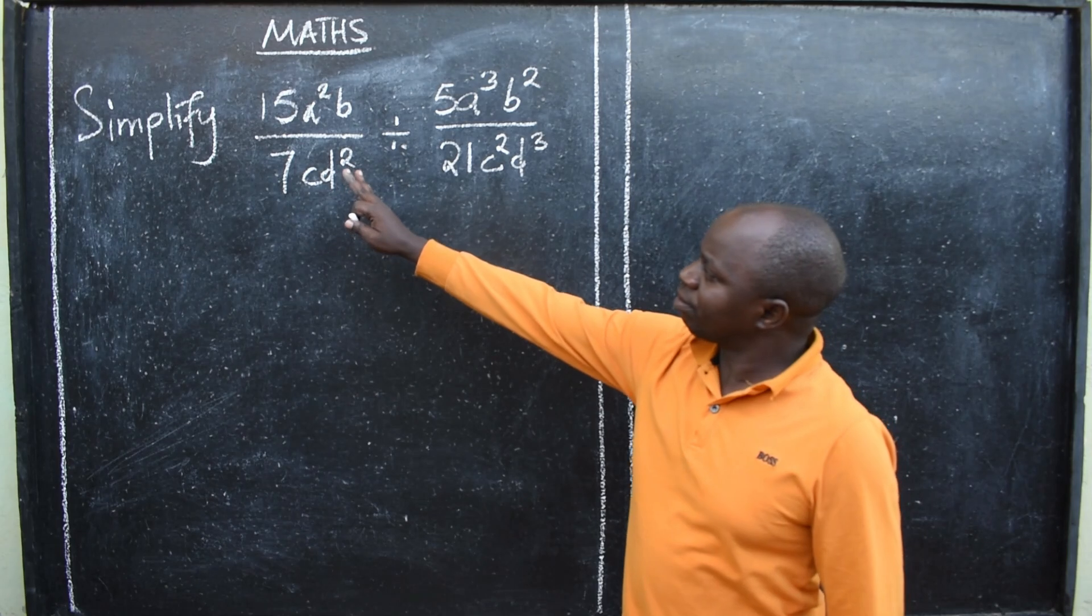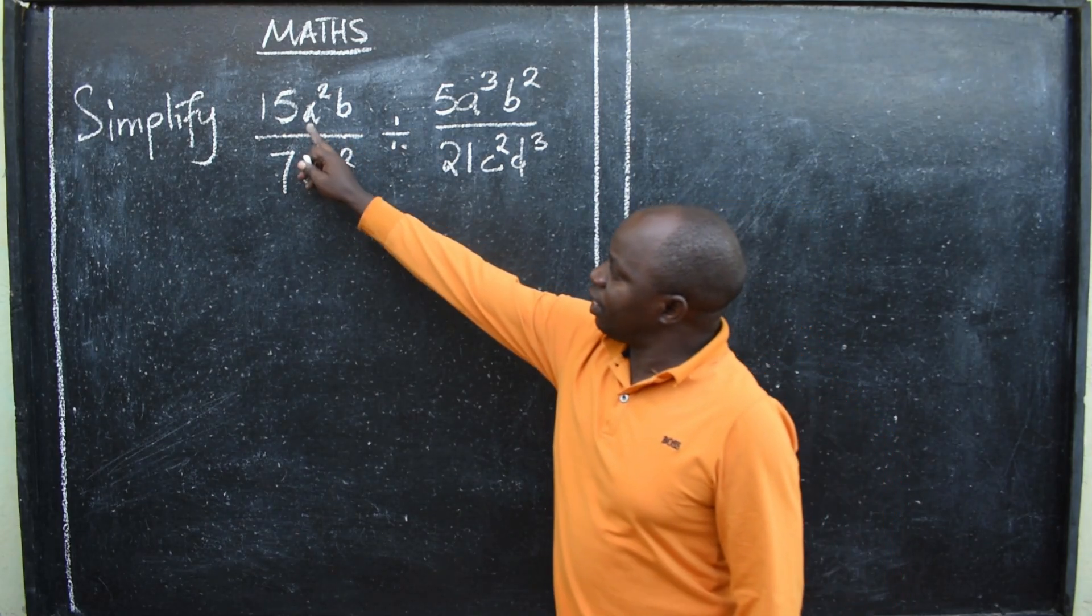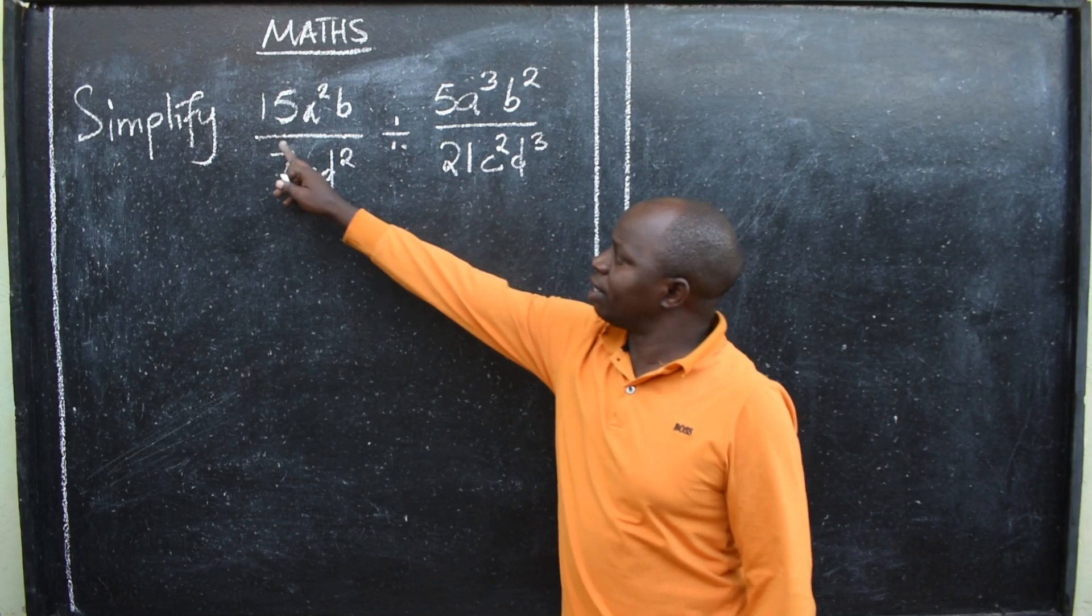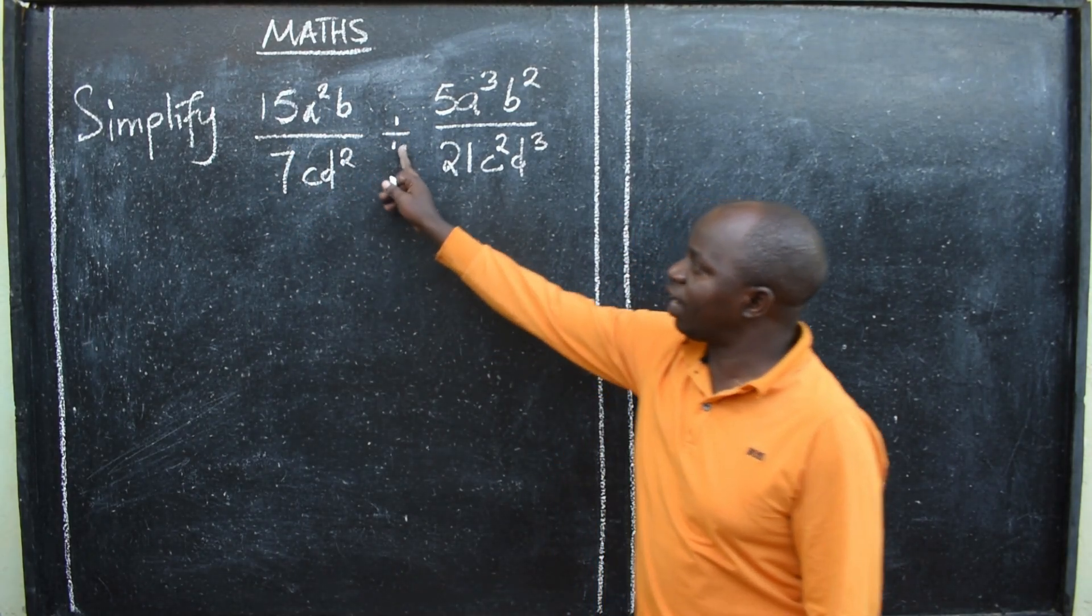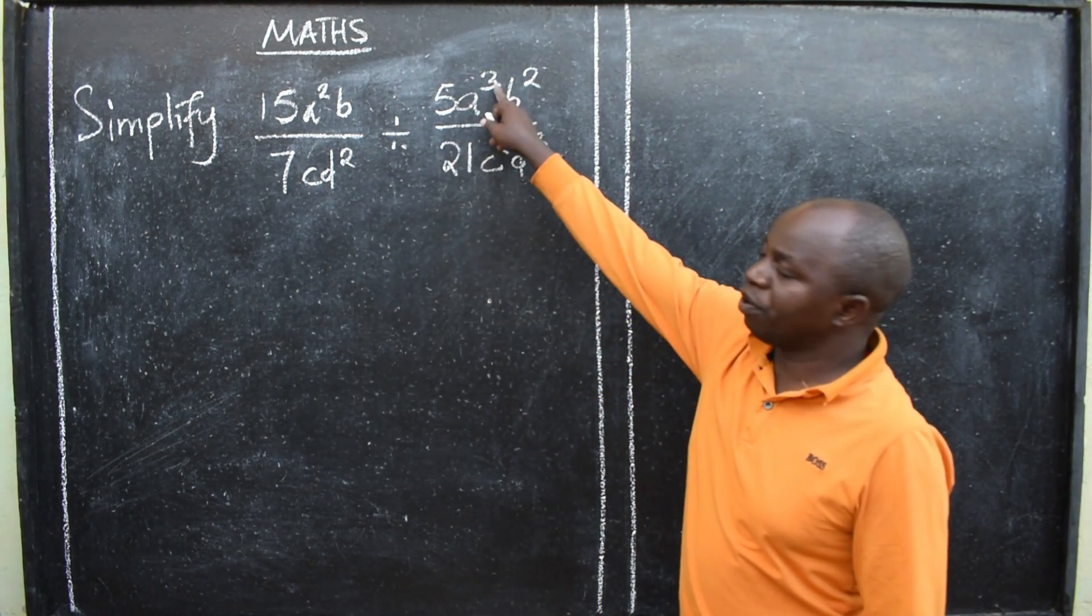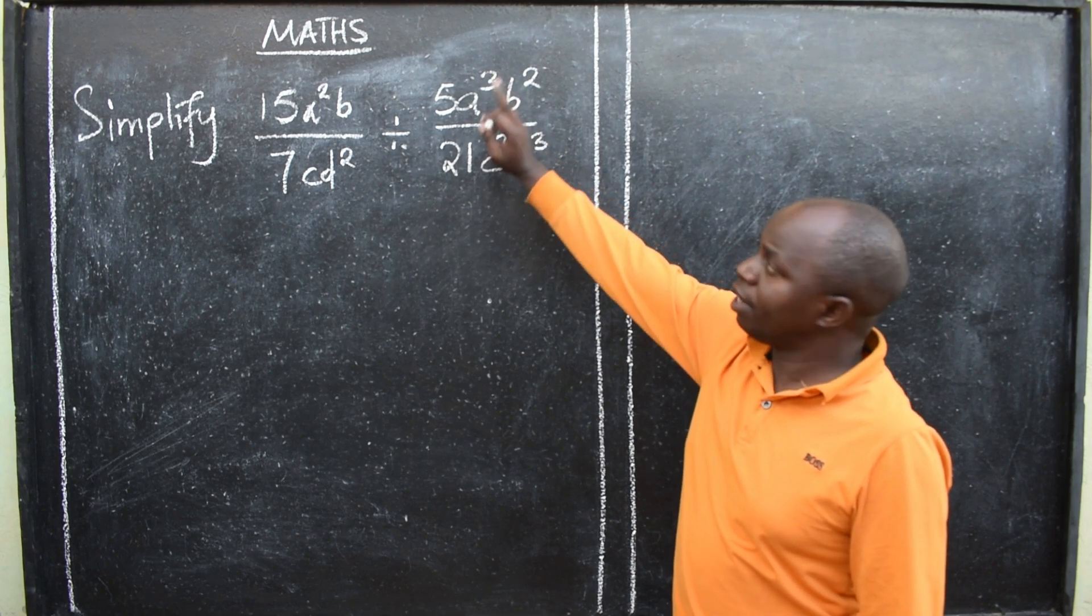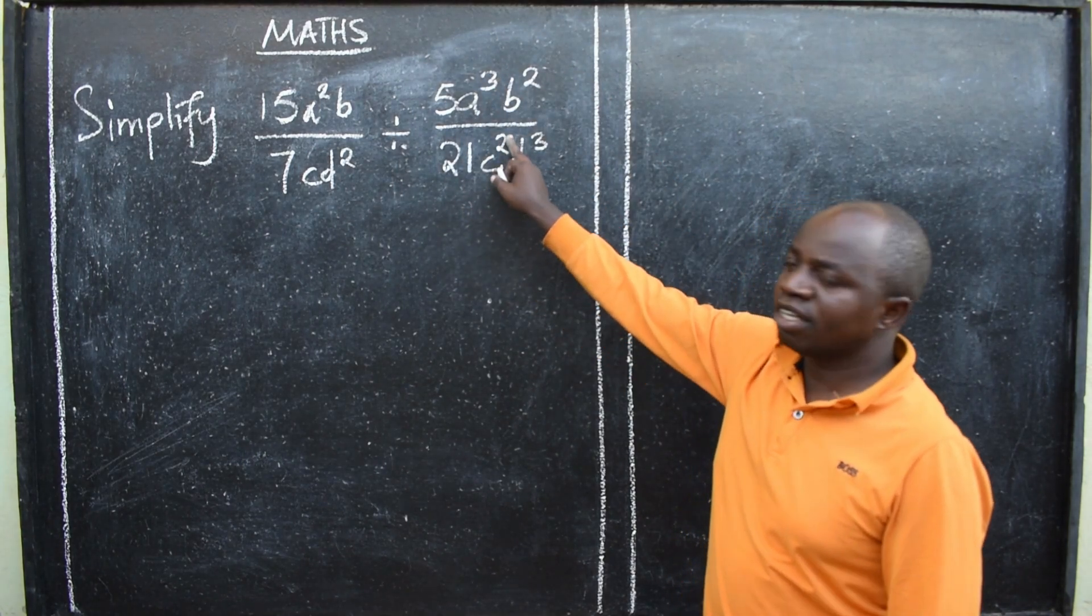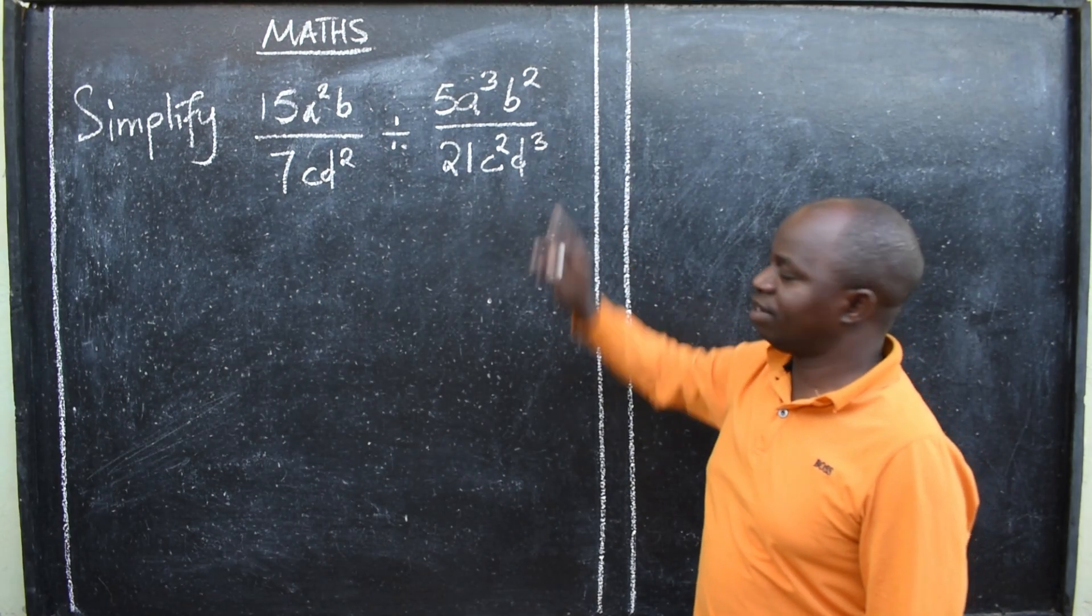Simplify 15a² b divided by 7cd² divided by 5a³ to the power 3b² divided by 21c² d³.